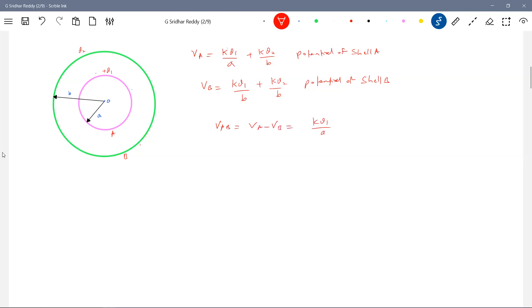So KQ1 by... KQ1, KQ2 by B get cancelled. So we'll get KQ1 by A minus KQ1 by B. Look, so what will happen to the charge on this shell? Will not determine potential difference. If I add, or if I remove some charge on shell B, what will happen to the potential difference? Independent. So what is the conclusion?